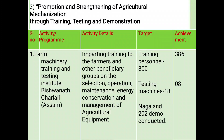Promotion and strengthening of agriculture mechanization through training, testing and demonstration. Activity: farm machinery training and testing institute located at Biswanath Chariali, Assam. Activity details: imparting training to farmers and other beneficiaries on selection, operation, maintenance, energy conservation and management of agriculture equipment. Training personnel: 800; testing machinery: 18 in Nagaland, 202 demonstrations conducted. Achievement is 386 and in testing it should be 08.